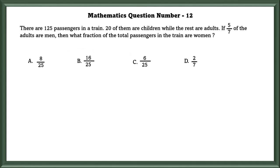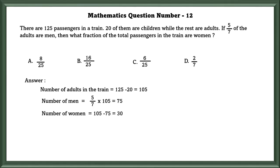Mathematics Question Number 12: There are 125 passengers in a train. 20 of them are children, while the rest of them are adults. If 5/7 of the adults are men, then what fraction of the total passengers in the train are women? In order to find how many adults are there, we have to subtract 20 from the total, as the 20 are children. So there are 105 adults. 5/7 of 105 are men, that is 75. 75 adults are men. Then what fraction of the total passengers in the train are women? In order to find how many women are there, we have to subtract how many men are there from the total adults. That is equal to 30. If we have to write this in fraction, so fraction of women to the total passengers in the train is equal to 30/125, that is equal to 6/25.